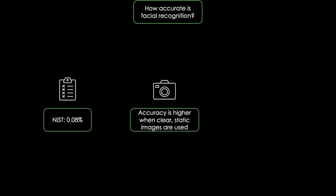However, in the real world, accuracy rates are usually lower, since people are moving or not looking directly into the camera, or are partially hidden by objects or shadows.